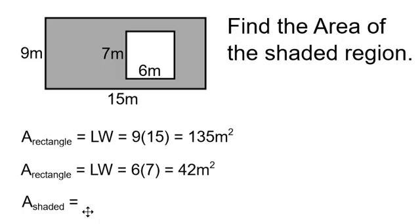Therefore, the area of the shaded region is going to be the area of the big rectangle minus the area of the small rectangle. 135 minus 42, which is 93 meters squared. The area of the shaded region is 93 meters squared.